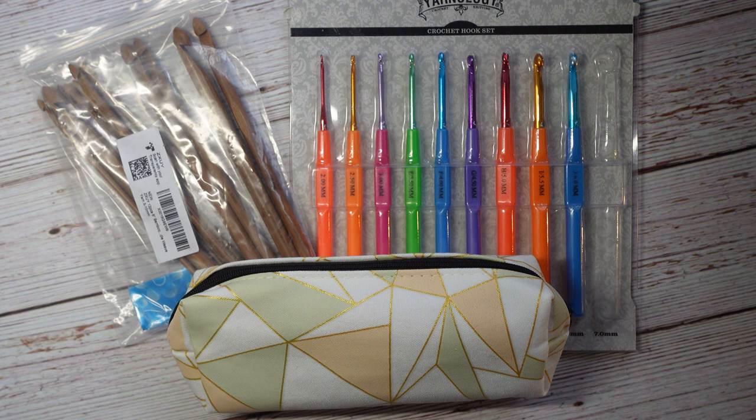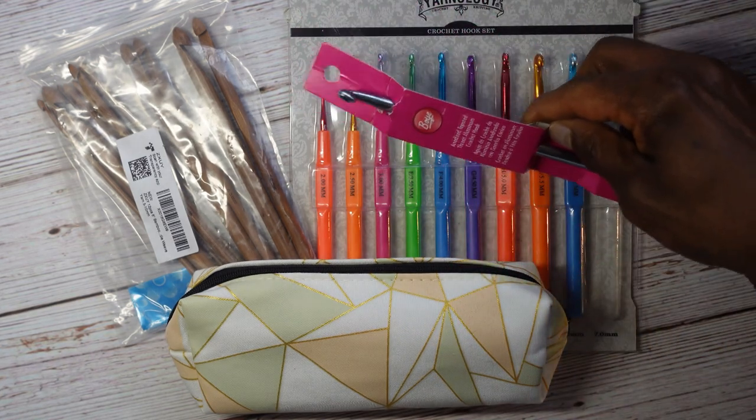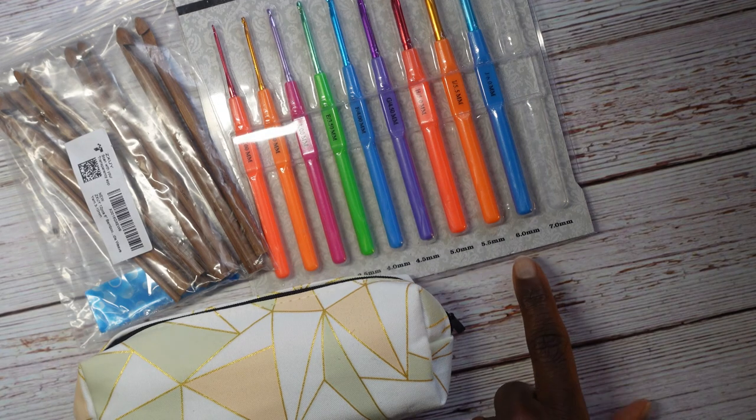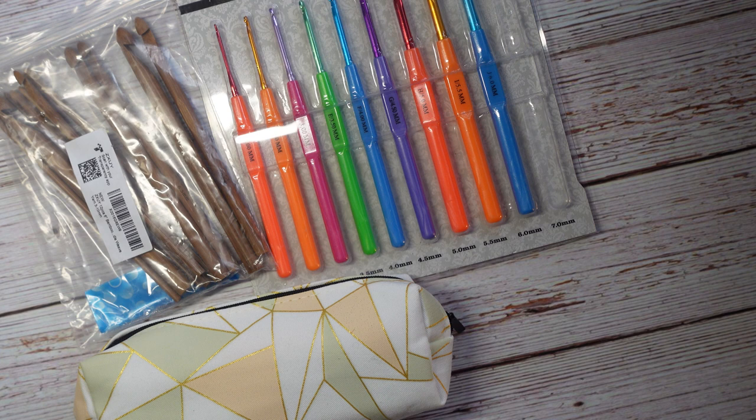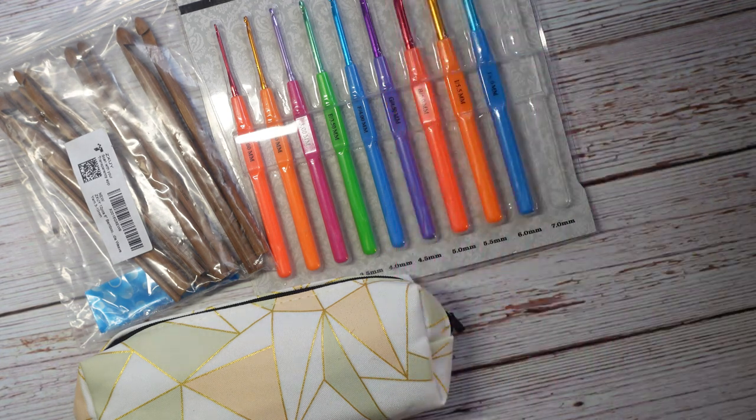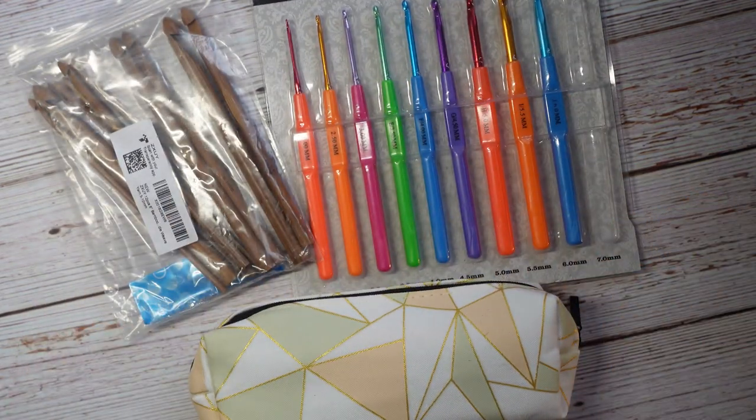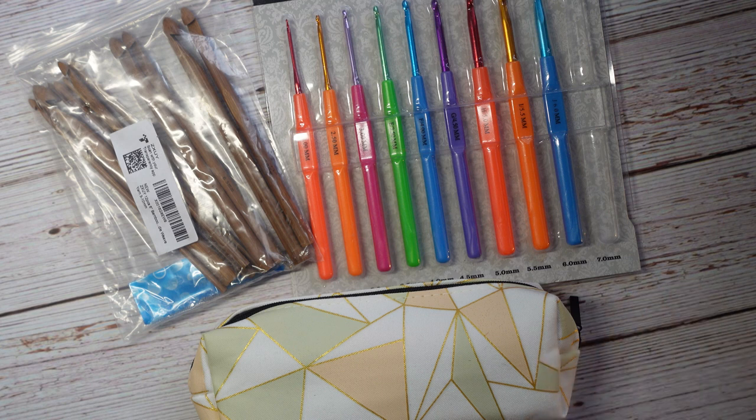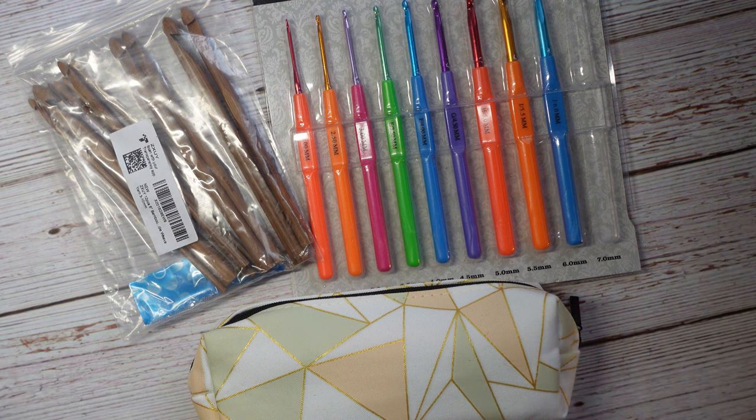Now if you happen to come across a pattern where they suggest a size that you don't have, then you can always at that point buy an individual crochet hook. For instance, this set has six millimeter and then seven millimeter. For some project that I was crocheting, it required a six and a half, so I bought this separately. But these sets are usually comprised of the most common sizes. And before you ask, if I have links to any of these things, I will leave them in the description.